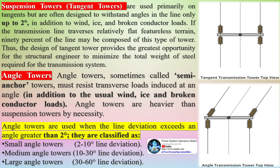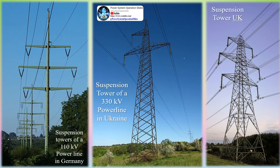Tangent towers are used primarily on tangents but are often designed to withstand angles in the line up to only 2 degrees, in addition to wind, ice, and broken conductor loads. If the transmission line traverses relatively flat, featureless terrain, 90% of the line may be composed of this type of tower. Thus, the design of the tangent tower provides the greatest opportunity for the structural engineer to minimize the total weight of steel required for the transmission system.